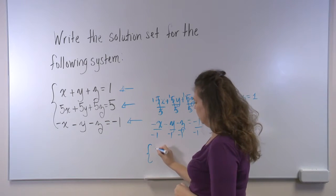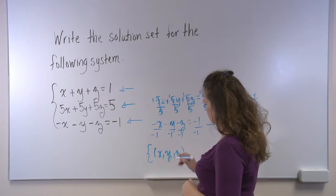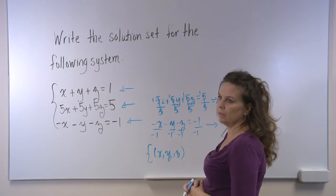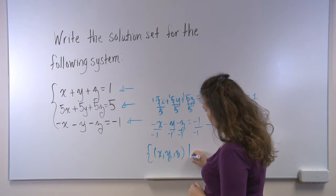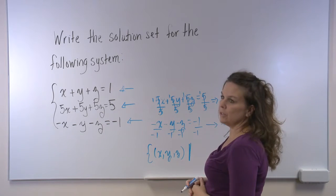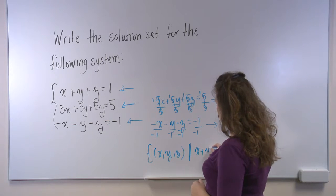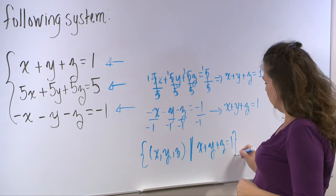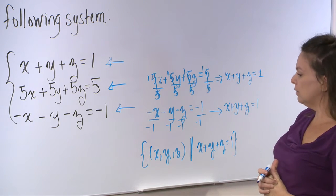The set of all ordered triples, x, y, z, and use parentheses to denote that ordered triple there, x, y, z. And then a vertical line, which we read as such that, such that x plus y plus z is equal to 1. And then close braces to indicate the end of the set.